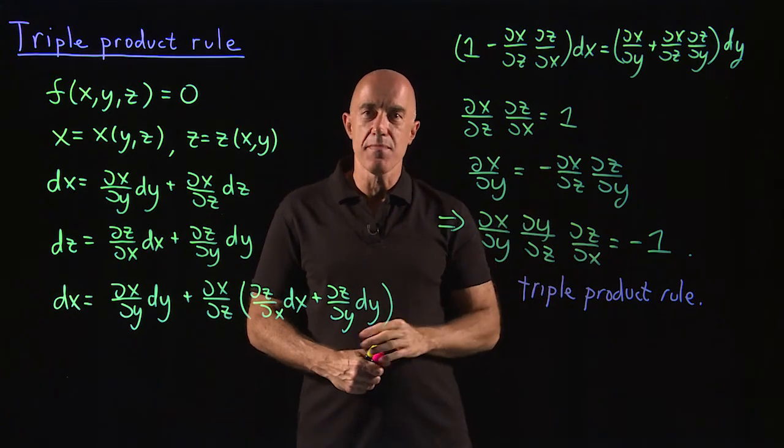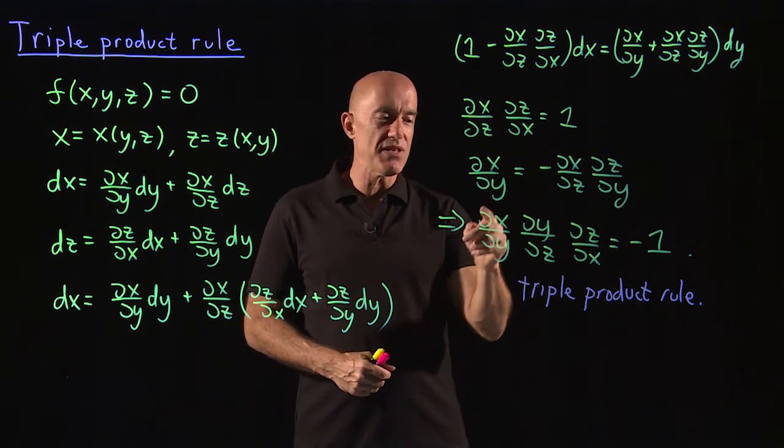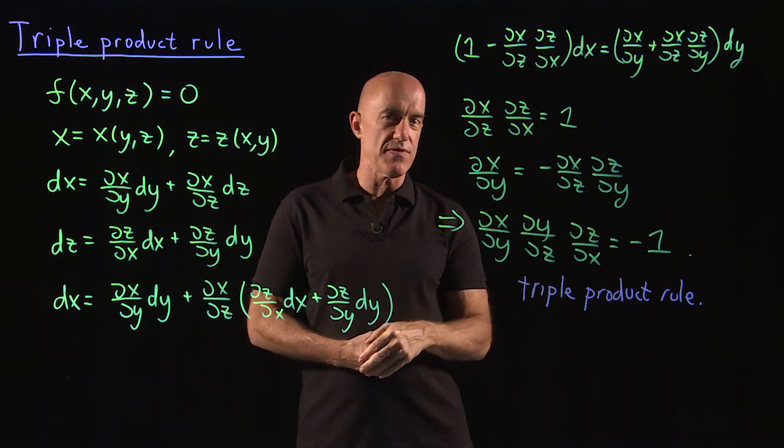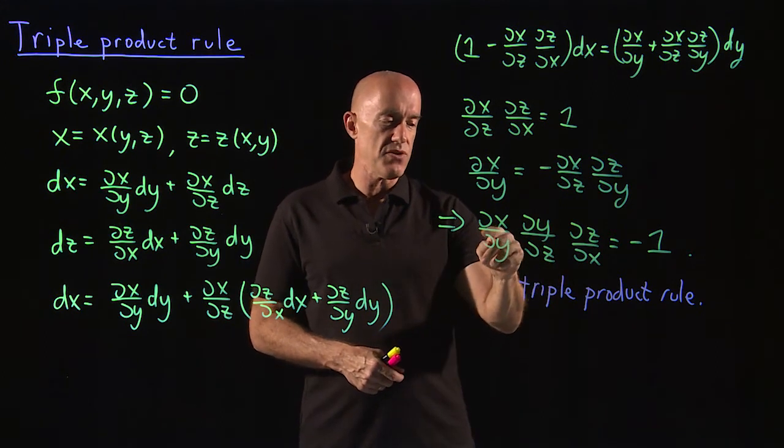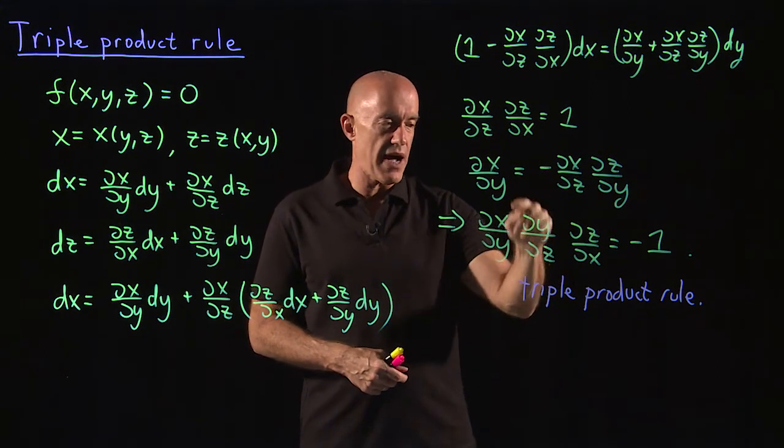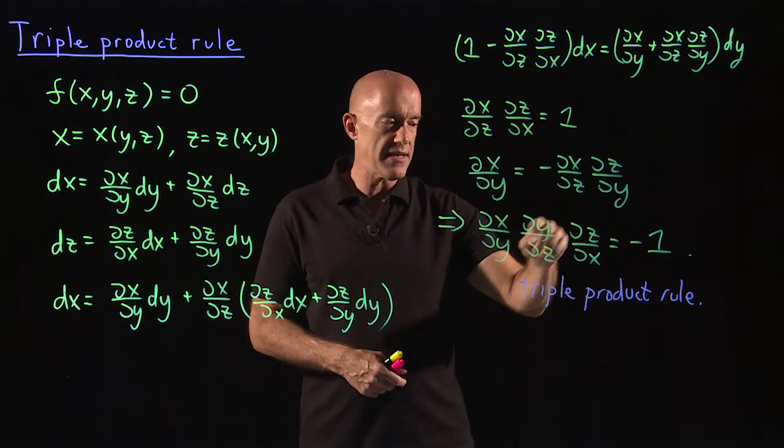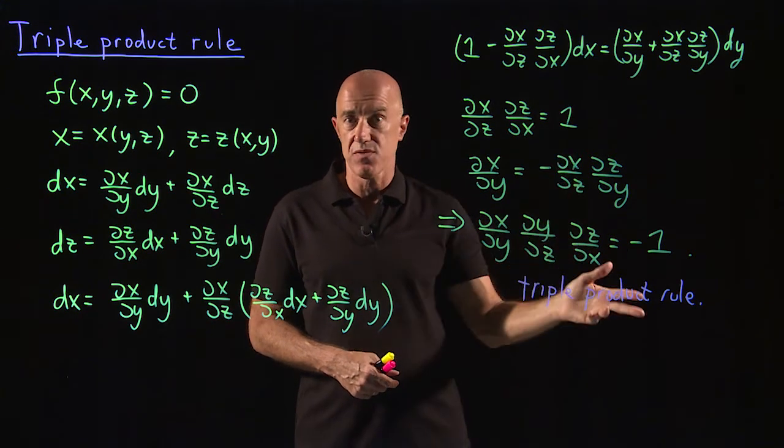That always amazes me, you know? I mean, if these were normal derivatives, derivatives of function of single variable, you would be very happy to cross out dy dy, dz dz, dx dx, and get plus one.